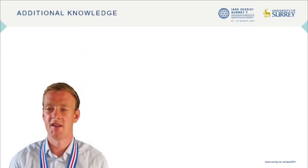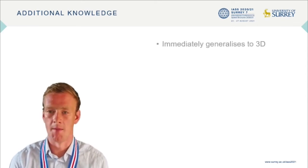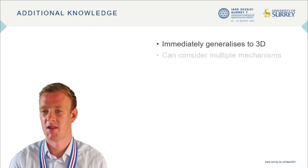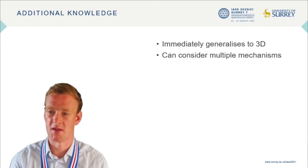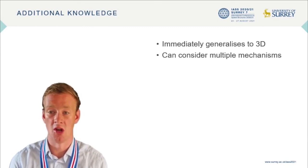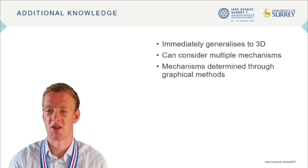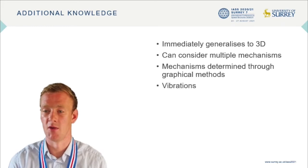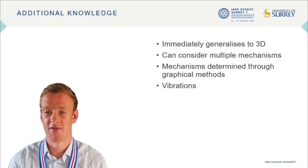This theoretical background can easily be extended to consider more cases. For example, it immediately generalises to 3D with Rankin stress functions and Rankin-Minkowski diagrams. It is also possible to consider multiple mechanisms within the same truss and determine whether the global structure is stable and which mechanism is the least stiff. Furthermore, when performing this analysis you obtain an effective stiffness of the mechanism, and it is also possible to find an effective mass for a given mechanism and then use Rayleigh's principle to estimate the natural frequency of the mechanism.